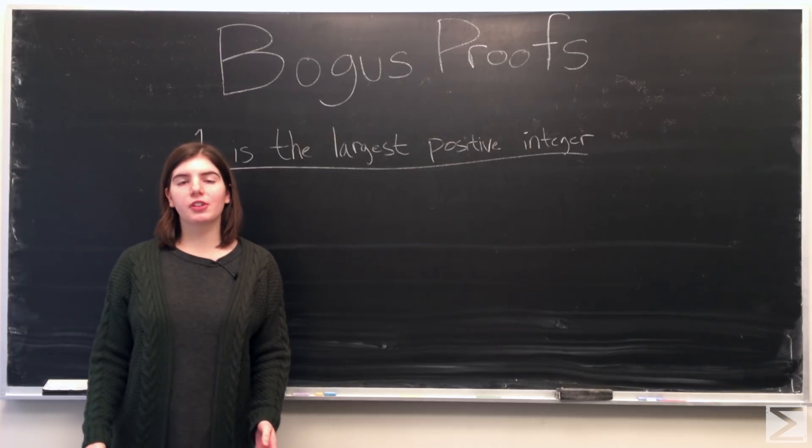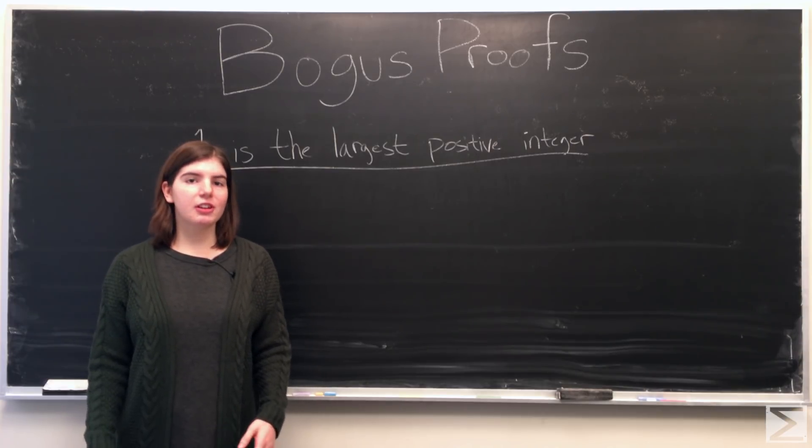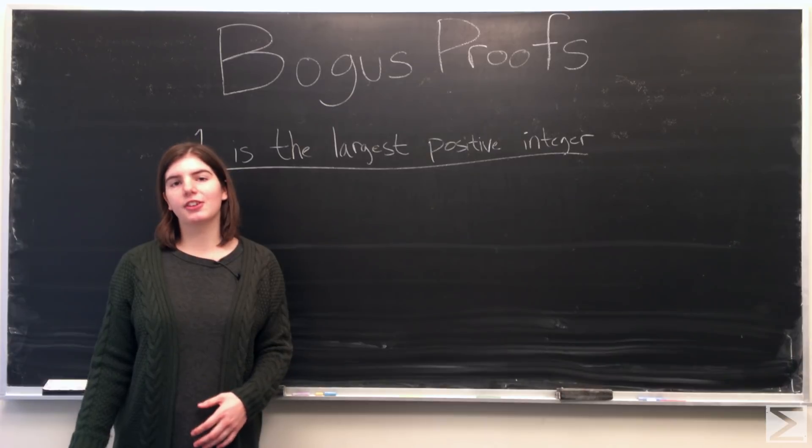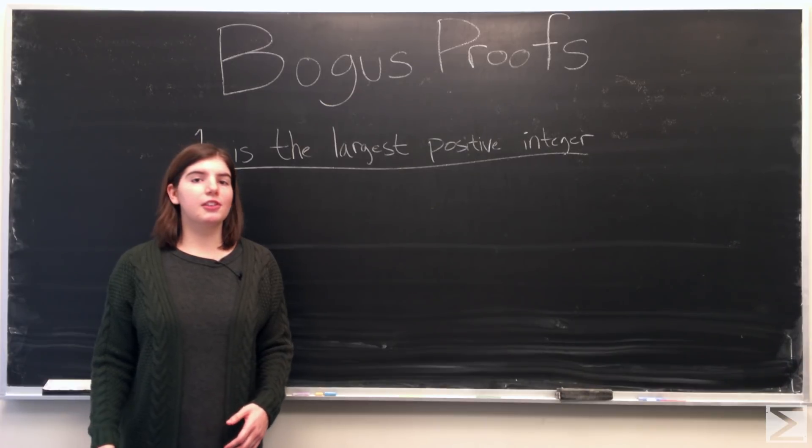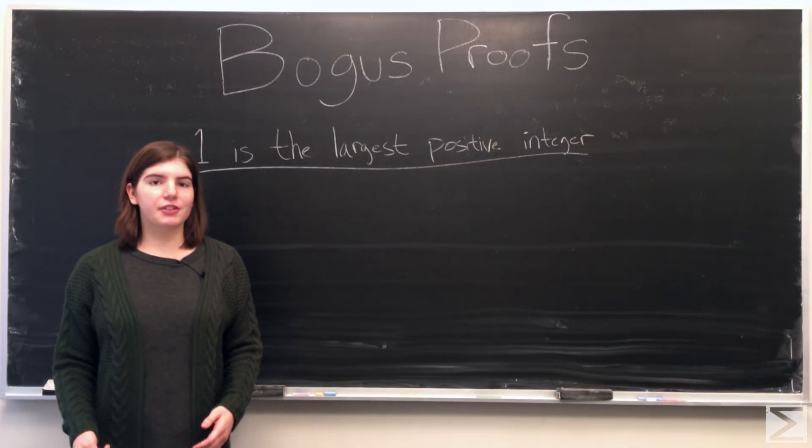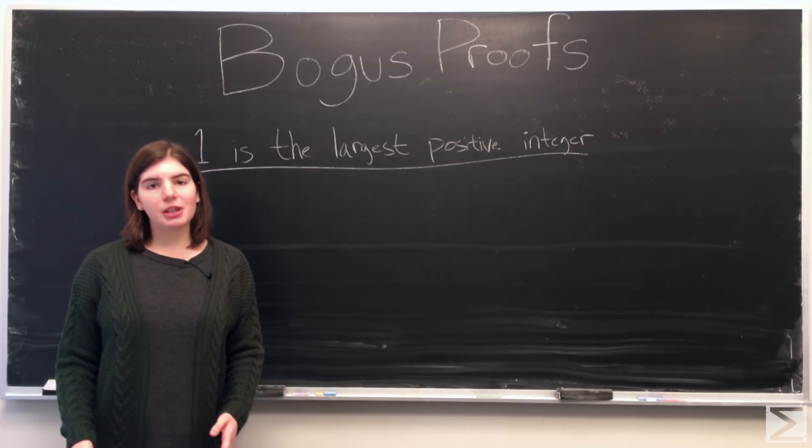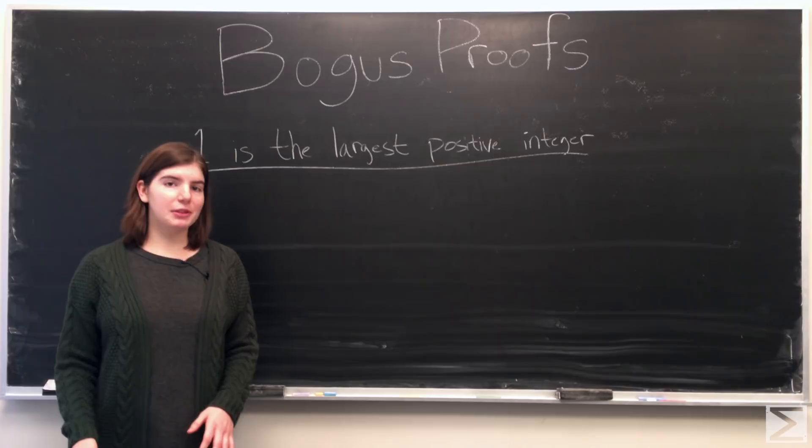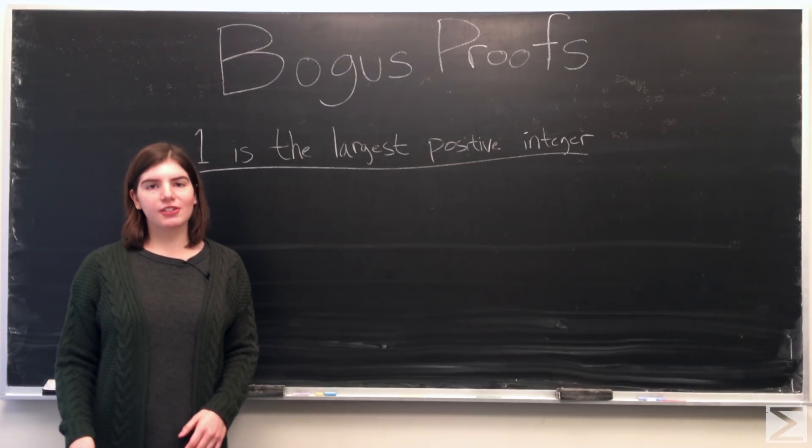Each proof is going to lead to some absurd result, but it's going to do it in such a crafty or clever way that the reasoning is going to appear correct. The proofs are flawed but the errors are subtle. You may be convinced by the proof and your common sense may be threatened, but I assure you there is going to be an error in each proof. You just need to find it.